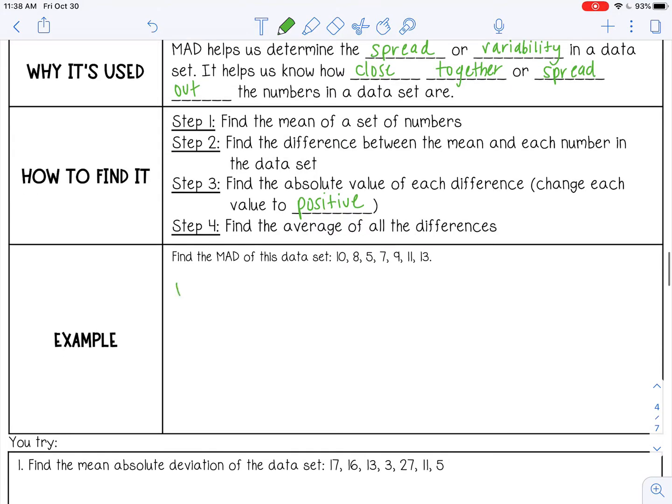So step one, find the mean. I'm going to add all these up and then divide them by 1, 2, 3, 4, 5, 6, 7. And when I do that, I get 9.